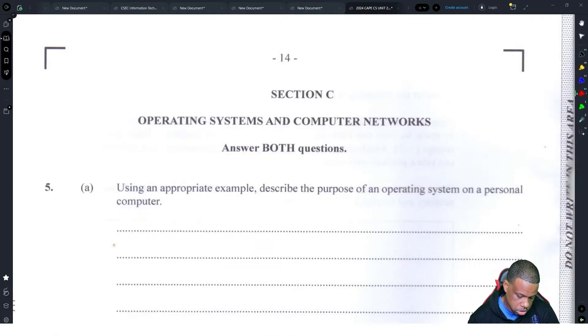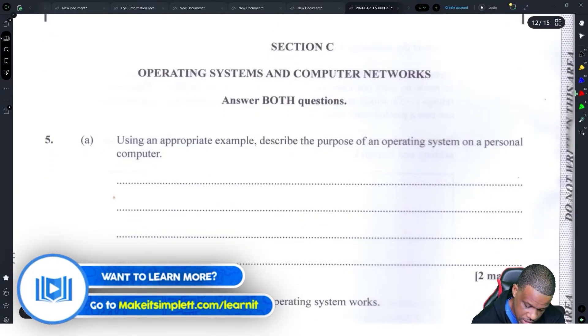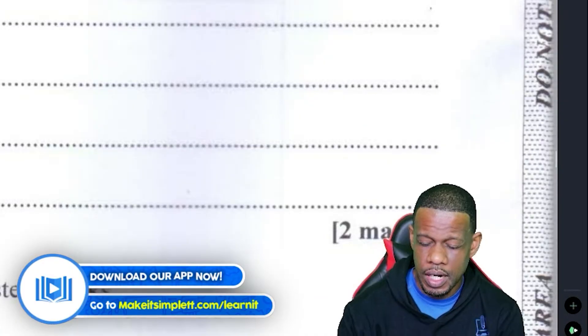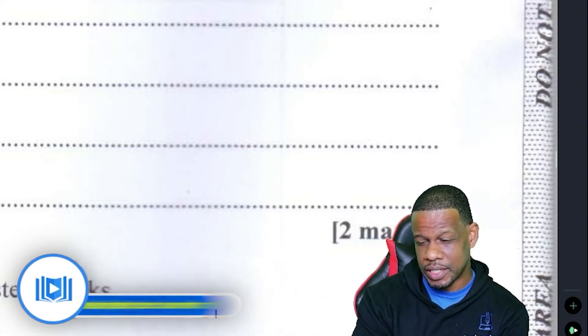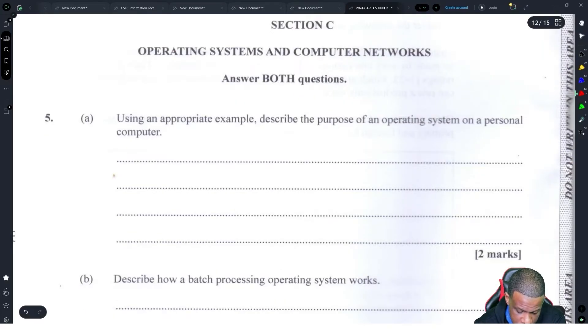Module 3. Now let's go. Using an appropriate example, describe the purpose of an operating system on a personal computer. Alright, module 3 is operating systems and networking, but they're also throwing SQL inside here, so we'll see what it holds.